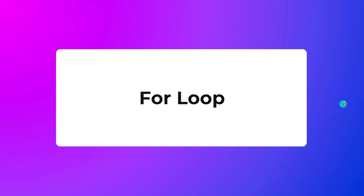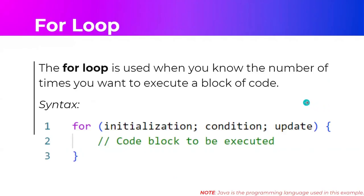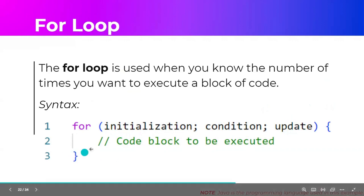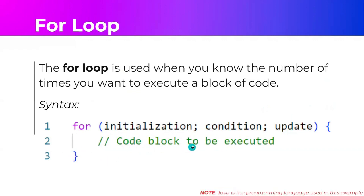Let's start with the for loop. The for loop is used when you know the number of times you want to execute a block of code. The syntax is: for (initialization; condition; update/afterthought). All three parts are optional in a for loop. Within the implementation we have the statements or block of code to execute while the condition is still true.